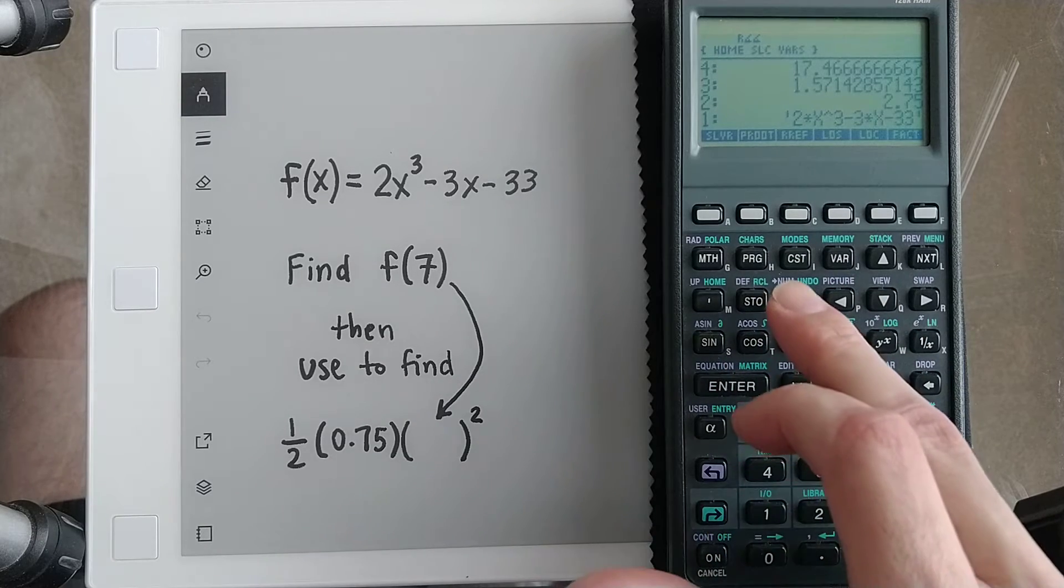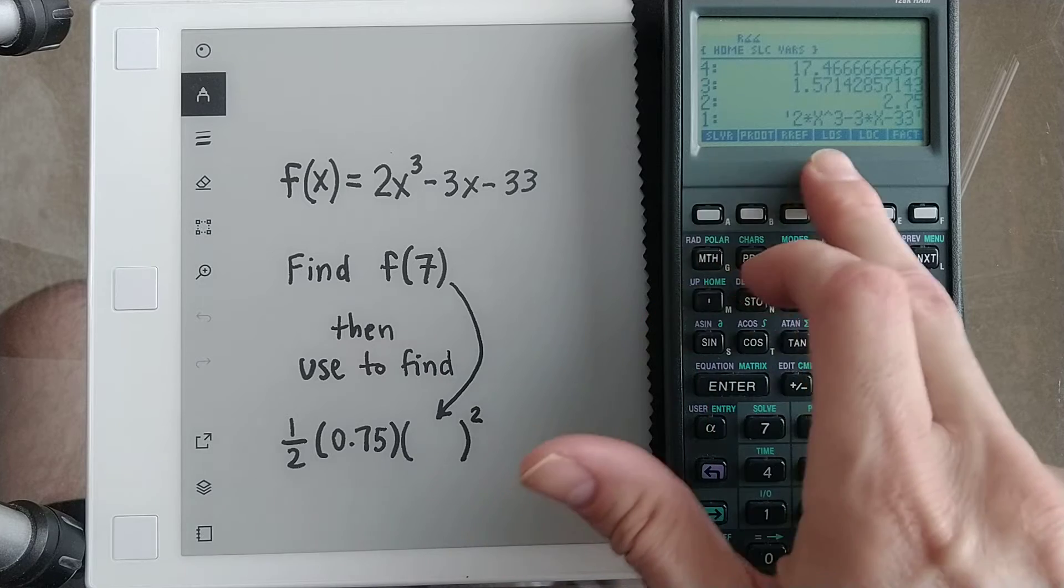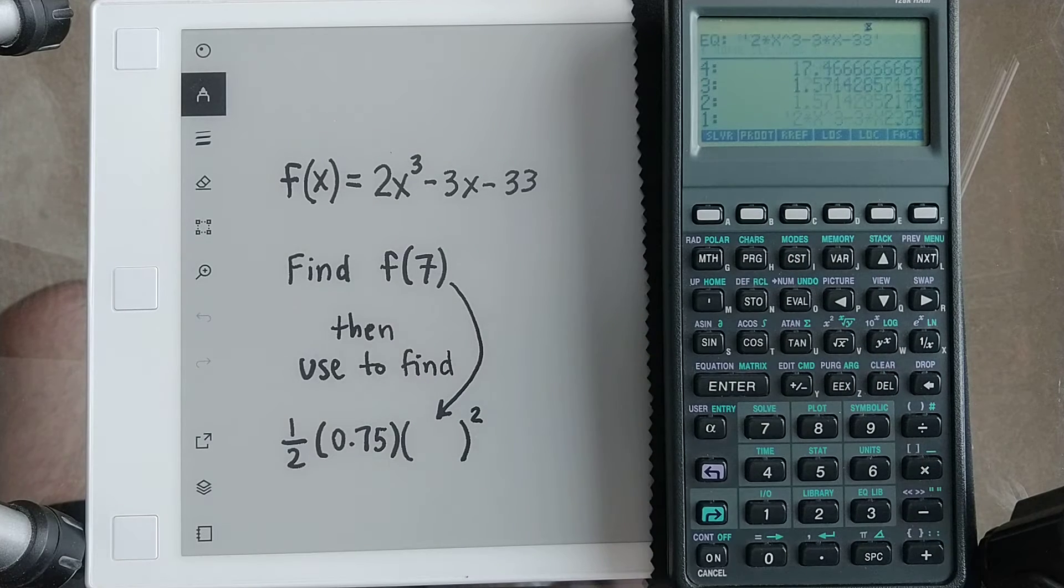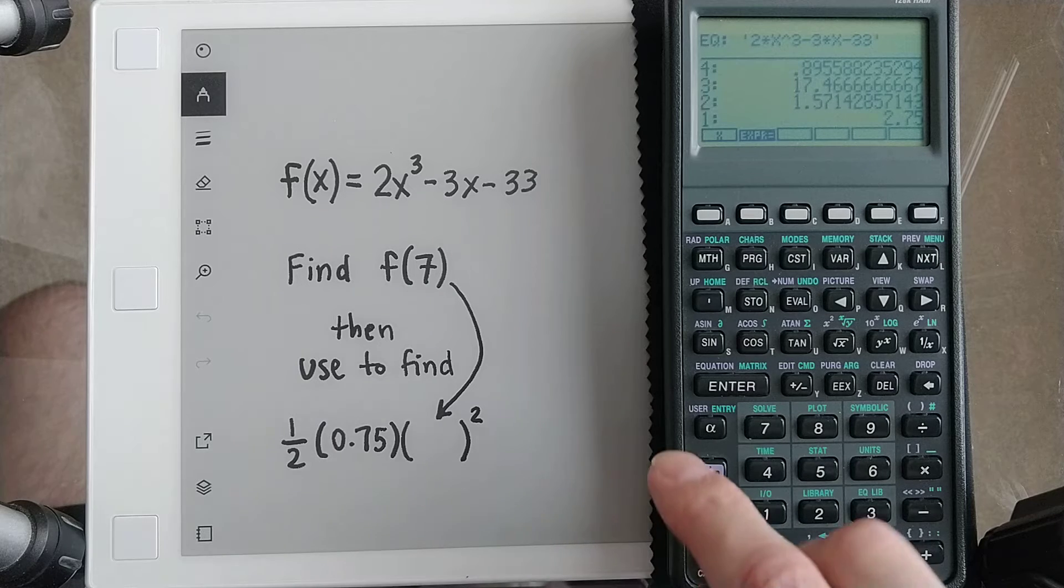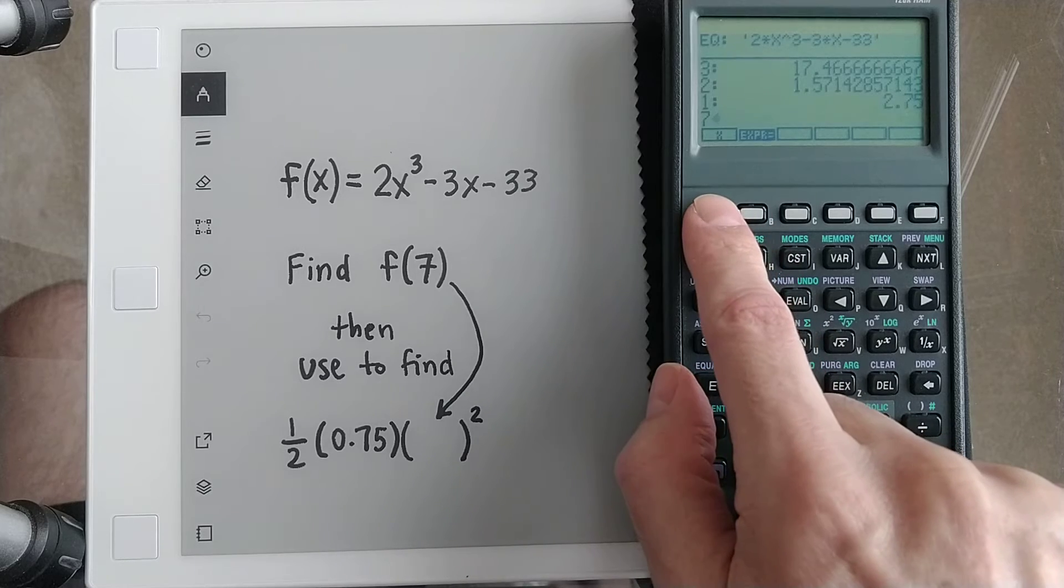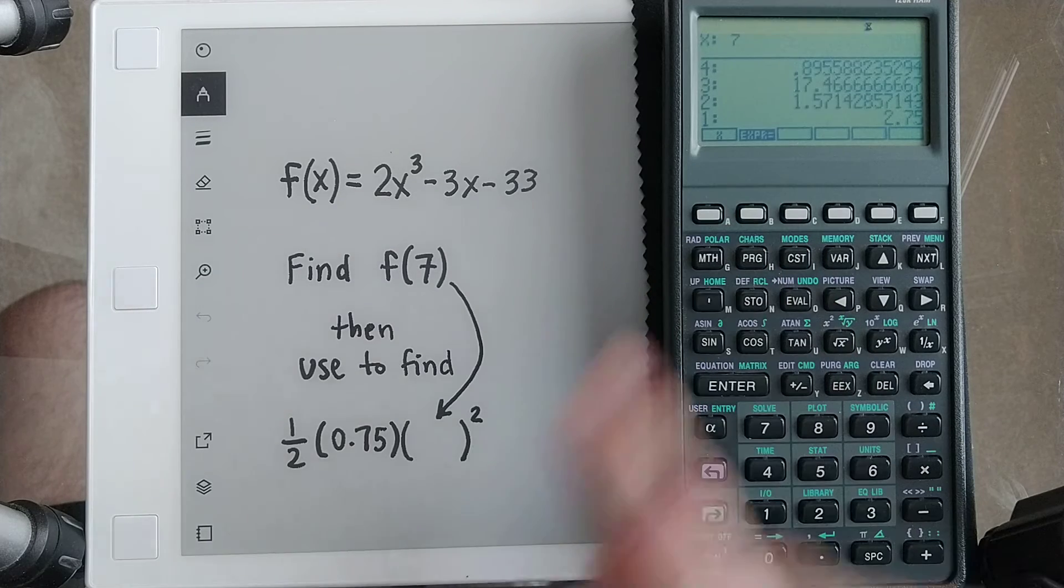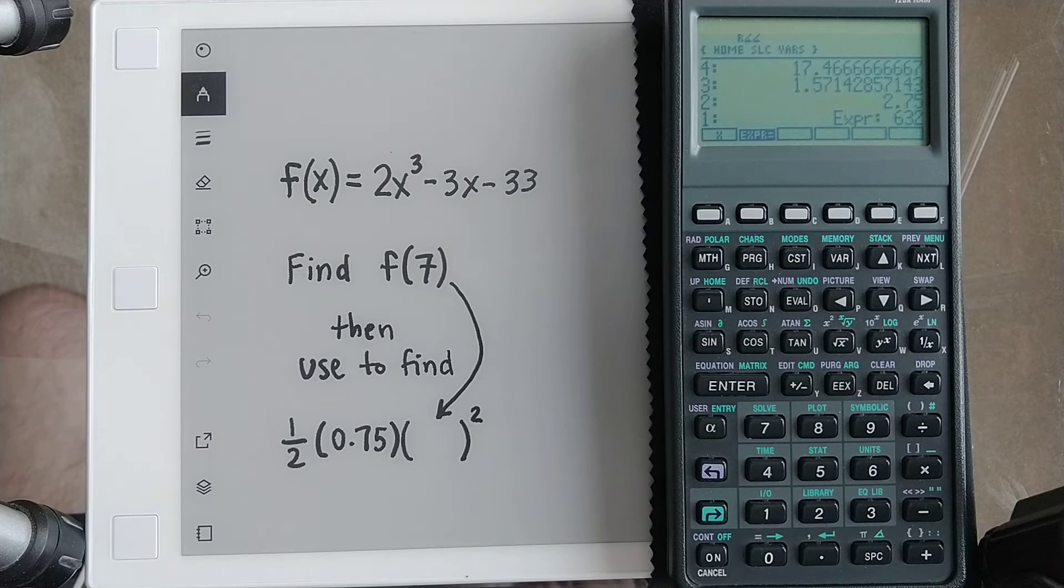I've got some shortcuts set up here. One of them just goes straight to the solver, so it takes that equation, stores it, and then takes me into the solver. I can put in the value 7 for x, and then say, well, what's the expression equal? 632.